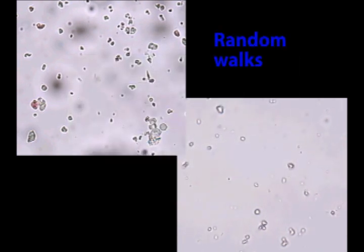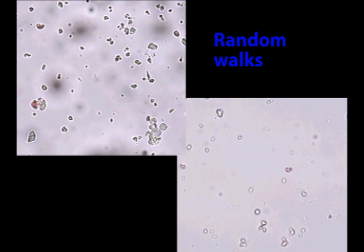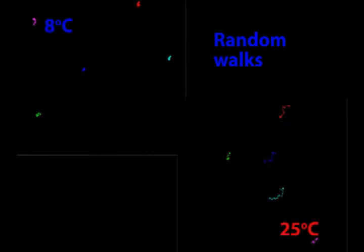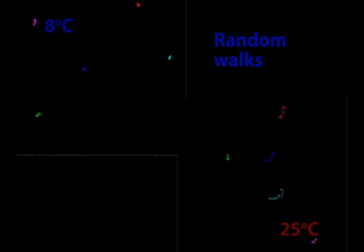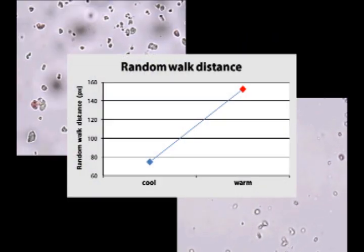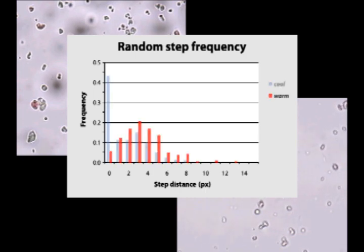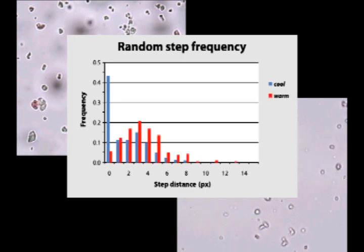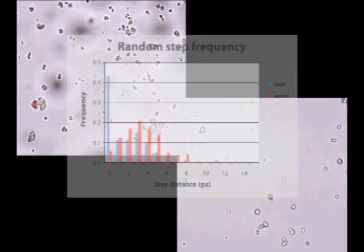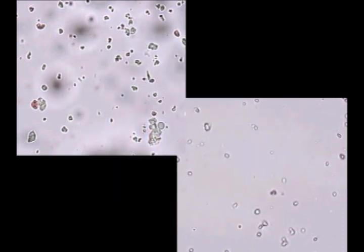We can also track how temperature affects the random walks. Here are tracks from five cool particles, and here are five tracks from five warm particles. It's obvious that random walks are longer when they are hotter. Clearly, the average distance traveled is greater when the system is warmer. When the system is warm, longer steps are more frequent than when it is cool. This makes sense — temperature is essentially random thermal motion. Increase the temperature, and the thermal motion increases, and with it, the Brownian motion as well.